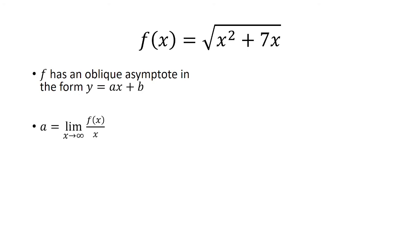We know that a is going to equal the limit as x approaches positive infinity of f of x over x. And the reason is because f has an oblique asymptote in the form of y equals ax plus b. That means that the limit as x approaches infinity of f of x is equal to ax plus b. And so when I divide this by x, I have ax plus b over x, which is just a plus b over x. And as x approaches infinity, b over x goes to 0, and you're just left with a.